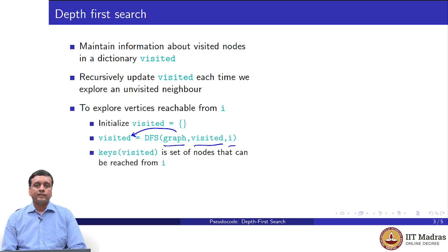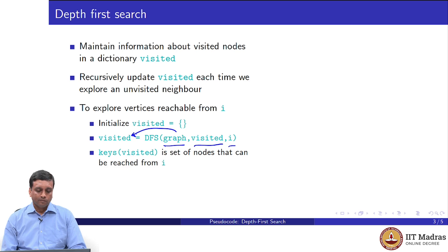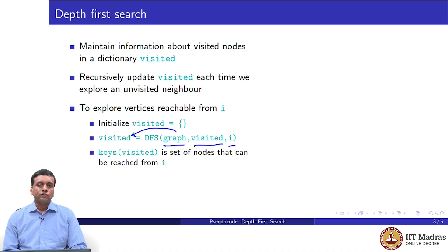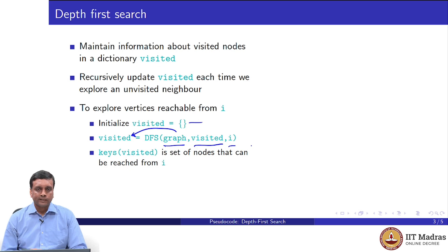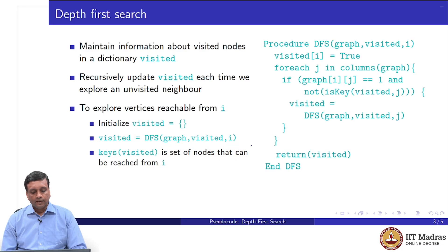I will update my visited vertices by taking whatever dictionary I get back from depth first search and updating it. After executing depth first search and updating visited, the keys of this visited dictionary — if I started with an empty dictionary — will be precisely those vertices which I can reach starting from i. So assuming I start with the empty dictionary and call DFS, i is the first vertex I explore. After going through this, DFS returns all the vertices that were visited in the process of exploring the neighbours of i, telling us which things are reachable.